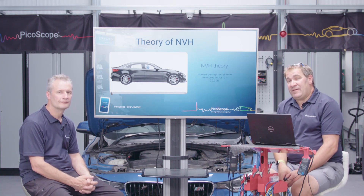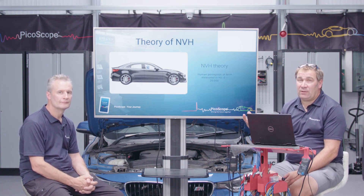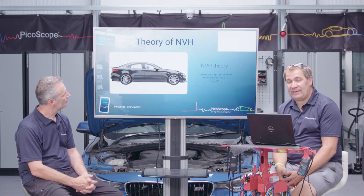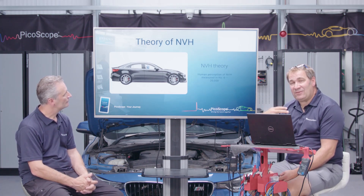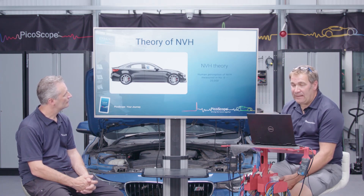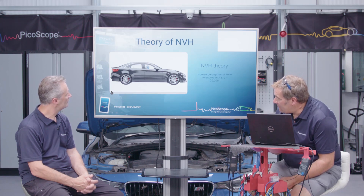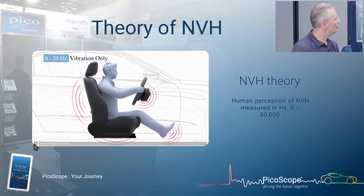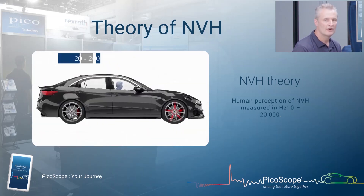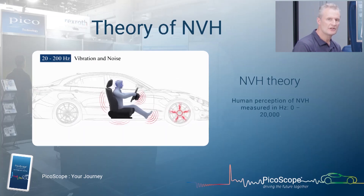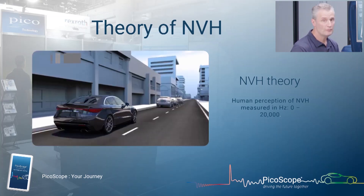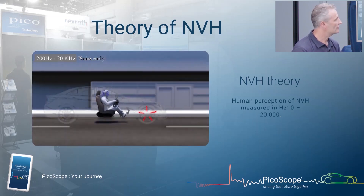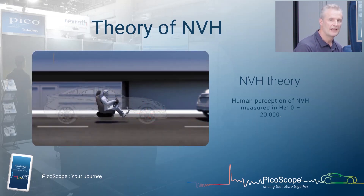Now we'll look at the theory of NVH. We're going to take you through a few slides on how humans perceive different levels of sound, measured in hertz between 0 and 20,000 hertz. So 0 to 20 hertz — that's vibration only; that's where you look in the spectrum for vibration complaints. 20 to 200 hertz is a combination of both — you may perceive it as vibration, noise, or both. And from 200 hertz up to 20,000 hertz is noise only — for example, awful brake squeal — where we use the microphone to capture those frequencies.